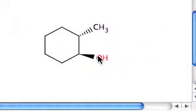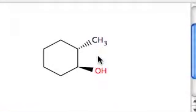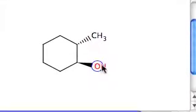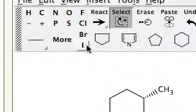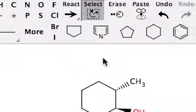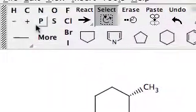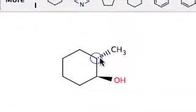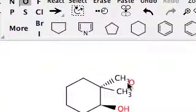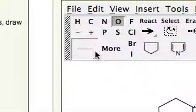So the stereochemistry of the alcohol is going to be consistent with what it started as, as the epoxide. It's pointing towards us. And for the case of the incoming nucleophile, that's going to be our methoxy group. This is what we're going to end up with.